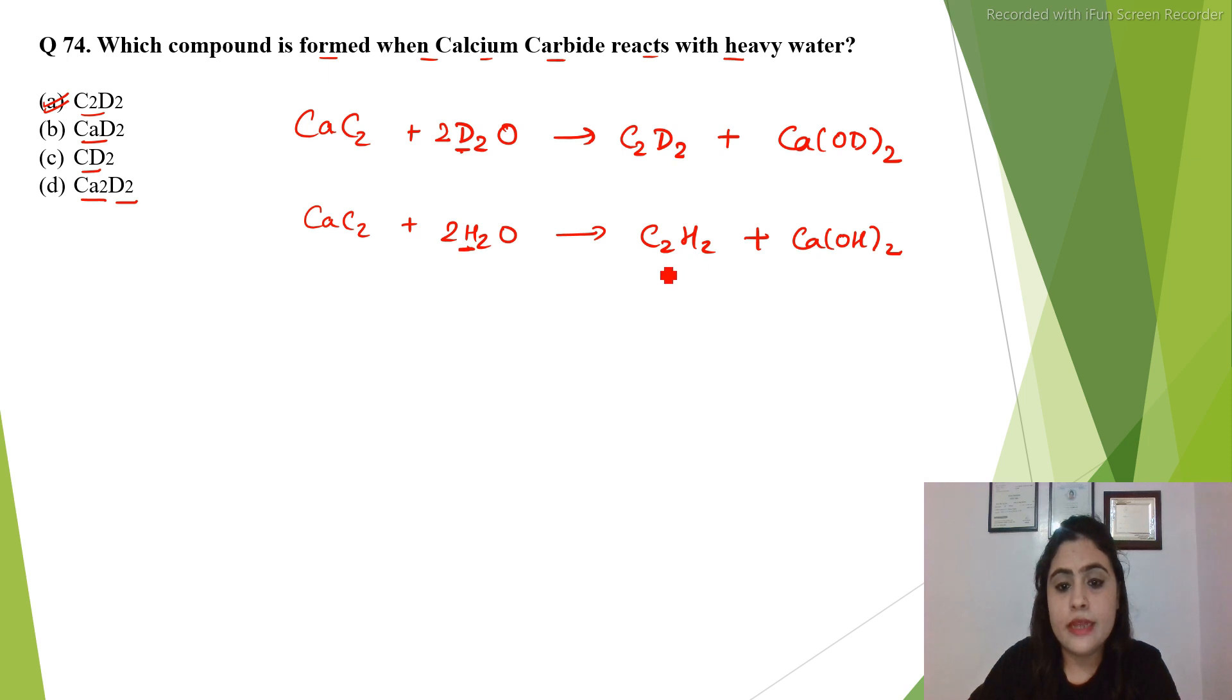Here we are getting ethyne. Here we are getting ethyne with the deuterium isotope of hydrogen, C2D2. So this is the correct product. This will be C2 and D2, and then CaO and another D2 will combine to form calcium deuterium hydroxide, or deuterium oxide. Here is calcium hydroxide.